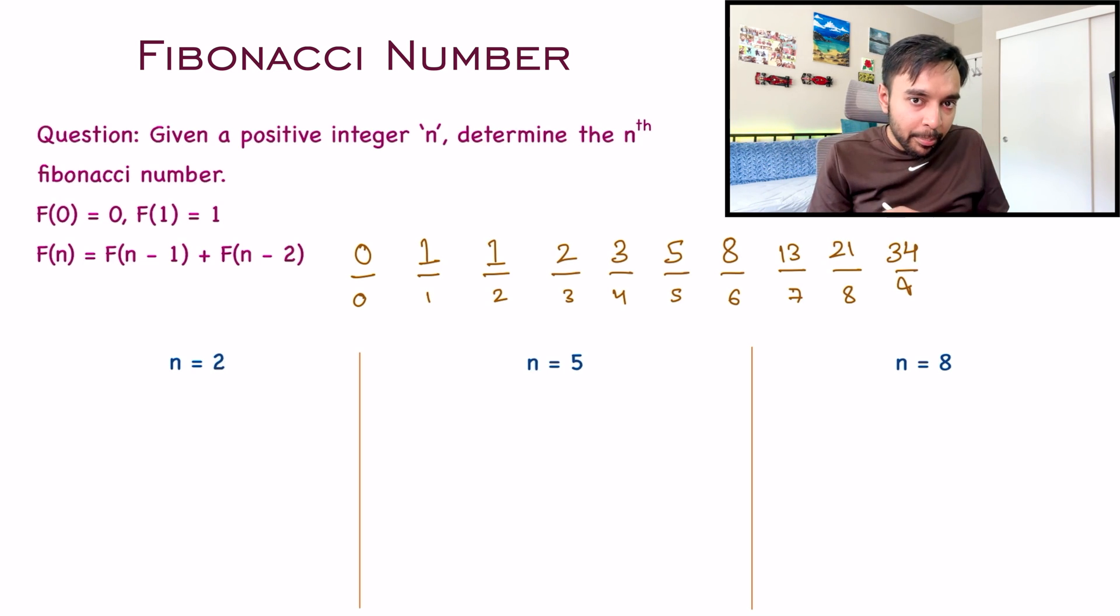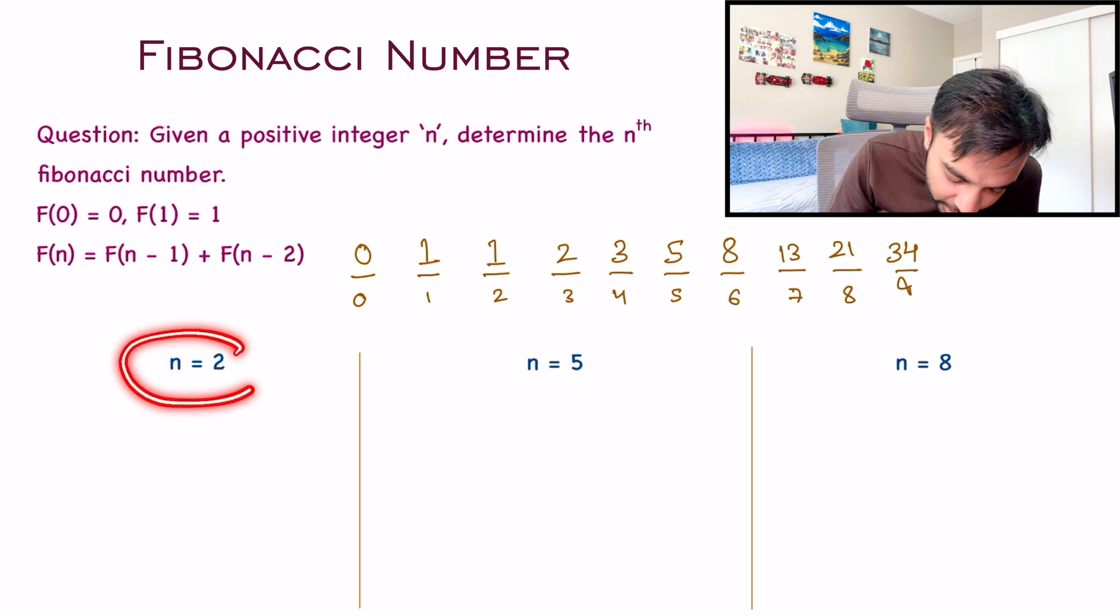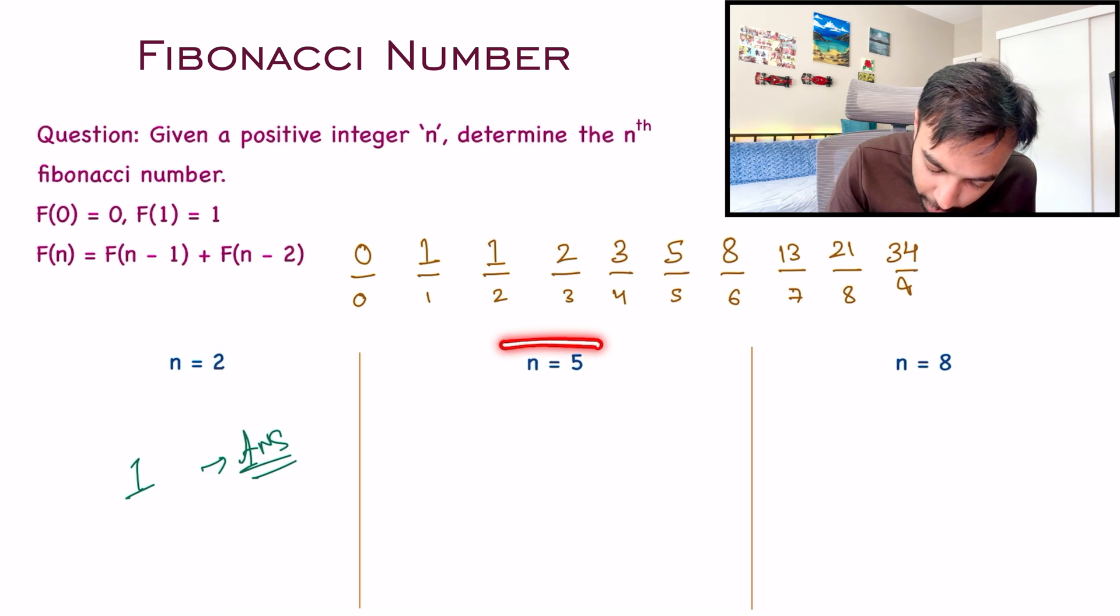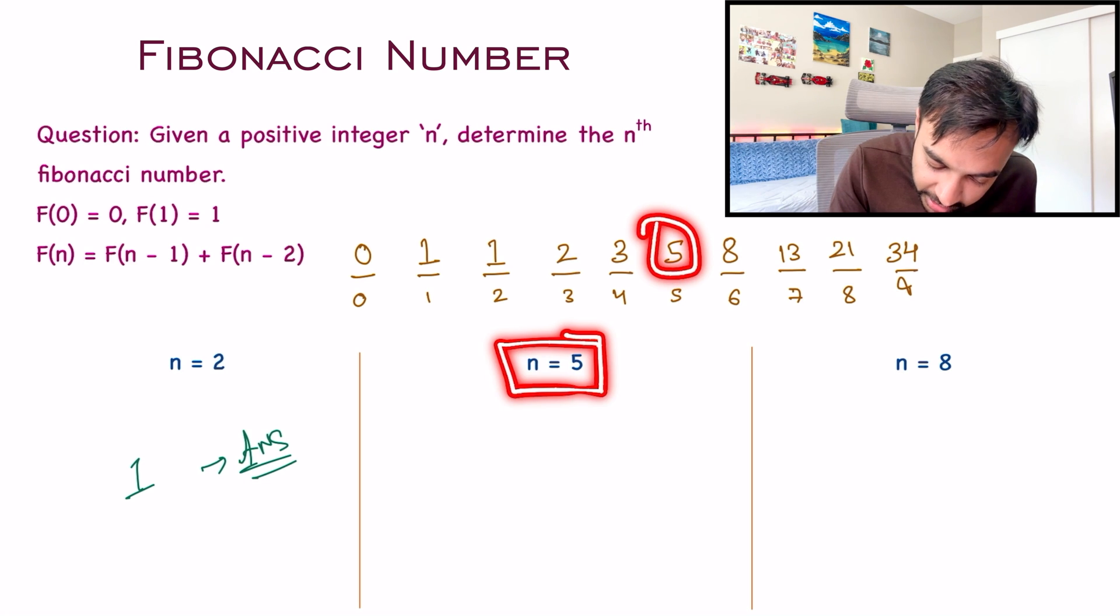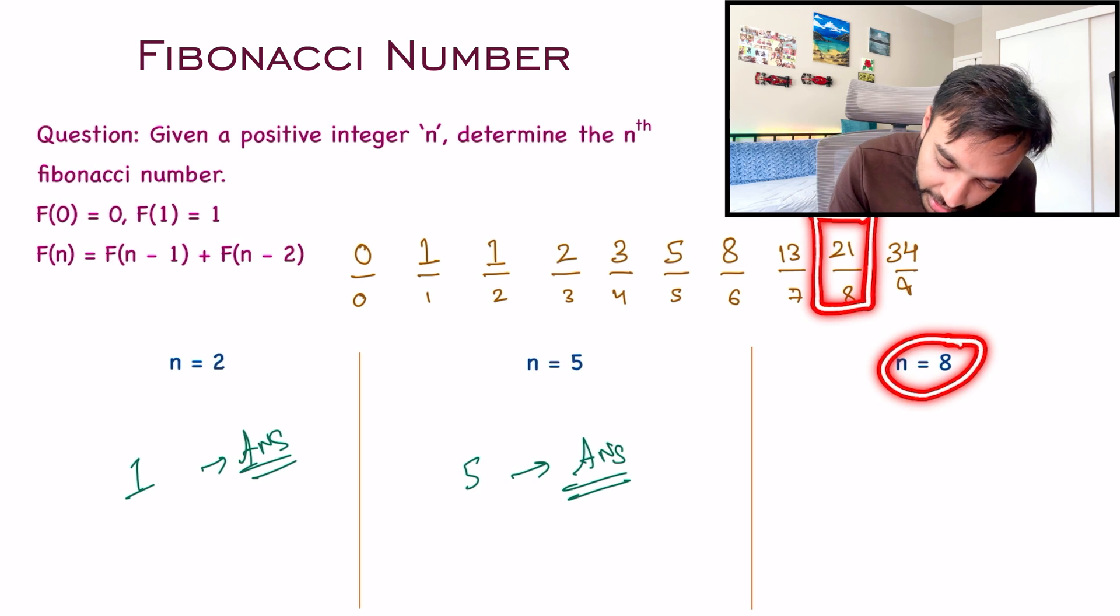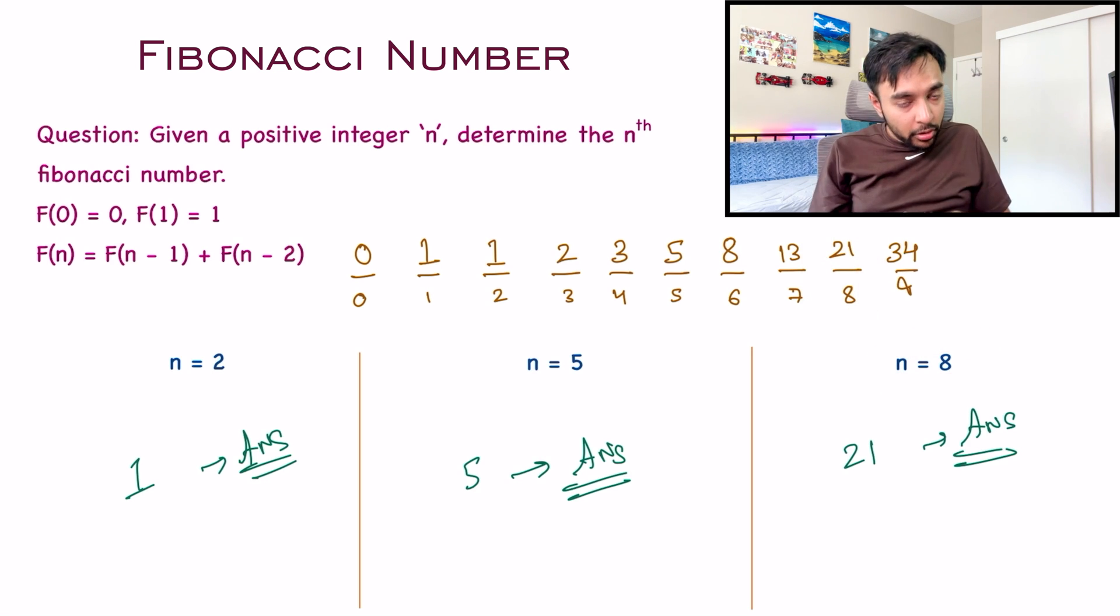Now if you look at the sample test cases: when n equals 2, the answer is 1. When n equals 5, the answer is 5. When n equals 8, the answer is 21. If you feel you've understood the problem statement, feel free to give it a try. Otherwise, let's dive into the solution and understand what is actually a Fibonacci series.